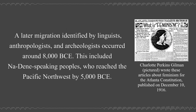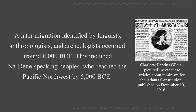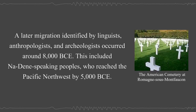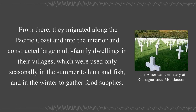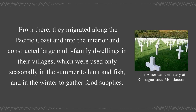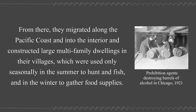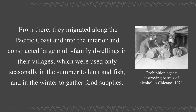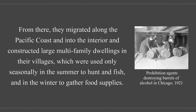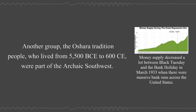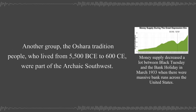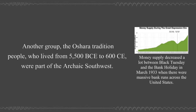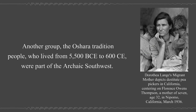A later migration identified by linguists, anthropologists, and archaeologists occurred around 8,000 BCE. This included Nadene-speaking peoples who reached the Pacific Northwest by 5,000 BCE. From there, they migrated along the Pacific coast and into the interior and constructed large multi-family dwellings in their villages, which were used only seasonally in the summer to hunt and fish, and in the winter to gather food supplies. Another group, the Oshara Tradition people, who lived from 5,500 BCE to 600 CE, were part of the archaic southwest.